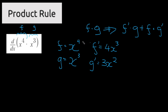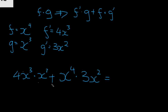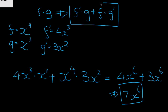Now we have our terms and can find the solution. f prime is 4x to the power of 3, multiplied by g which is x to the power of 3, plus f which is x to the power of 4 times g prime which is 3x to the power of 2. Solving this gives 4x to the power of 6 plus 3x to the power of 6, which becomes 7x to the power of 6. This is the final solution — we define our terms and their derivatives and follow the product rule.